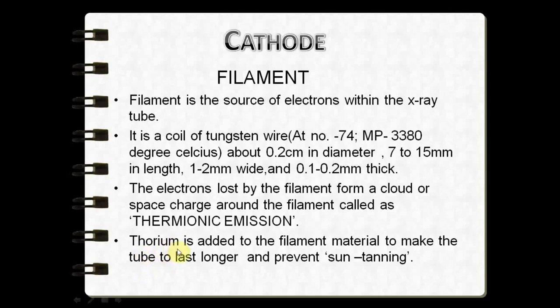Another material used is 1% thorium, added to the filament to make it last longer and to prevent a condition called sputtering. Sputtering means that over a long period of time, vaporization of the filament occurs — particles vaporize and solidify onto the glass envelope, leading to a condition that decreases x-ray output, causes destruction to the tube, and ultimately causes tube failure. That is why we use 1% thorium in the filament material.